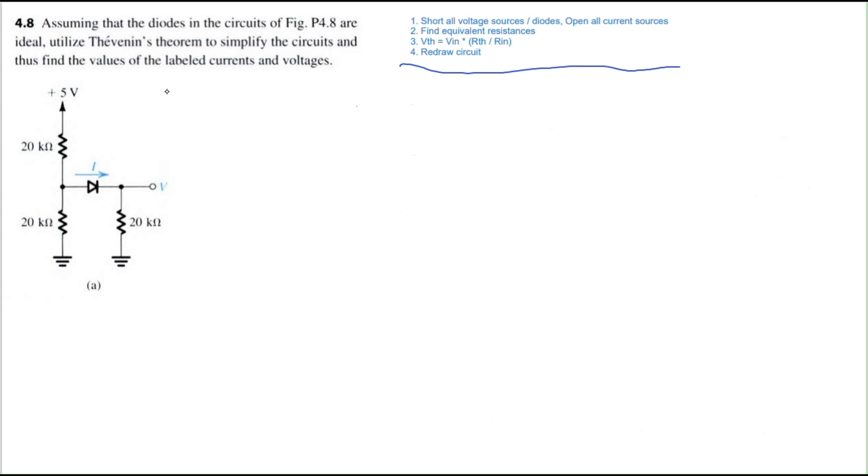We have a voltage source here of 5 volts and I'm going to go ahead and connect that to the ground over here, because we can assume that this 5 volts here is connected to ground by virtual short. Then we have a 20 kilo ohm resistor here, a node here, another 20 kilo ohm resistor here. Now we're going to short this diode, so just draw a wire.